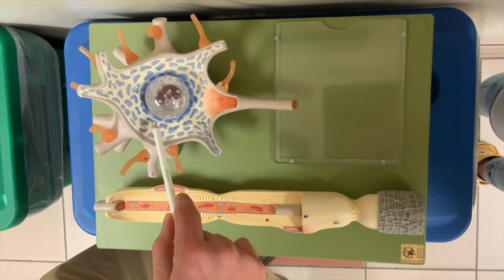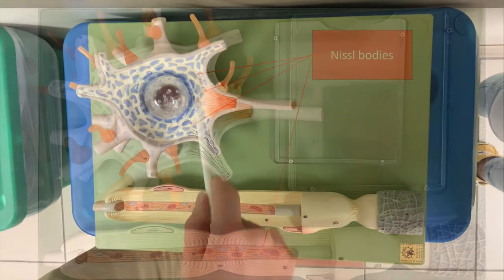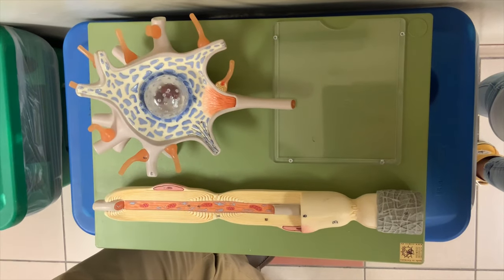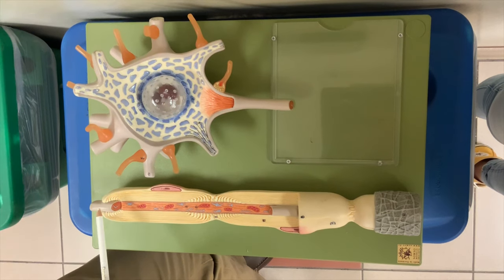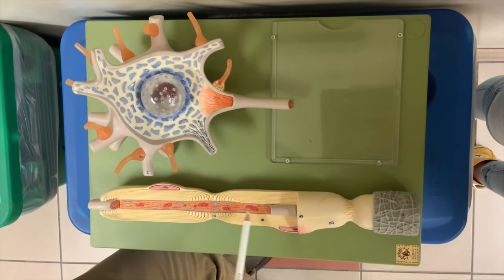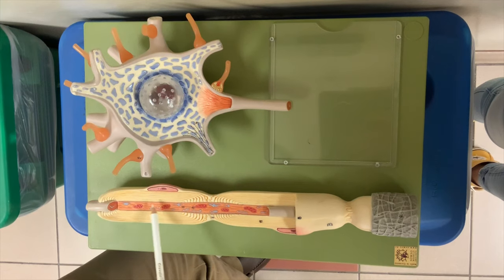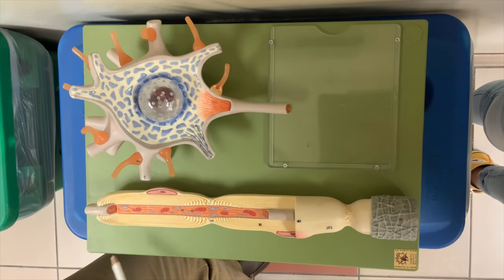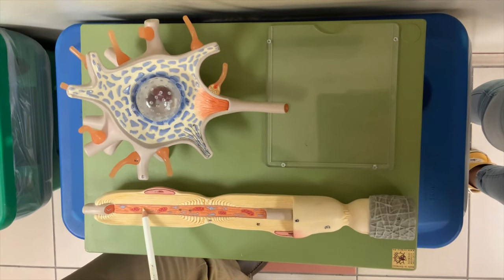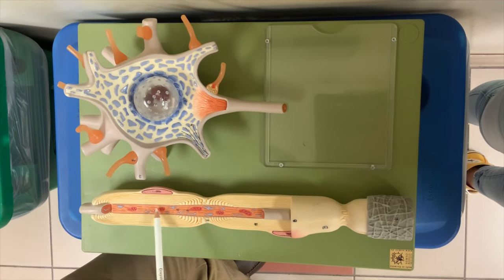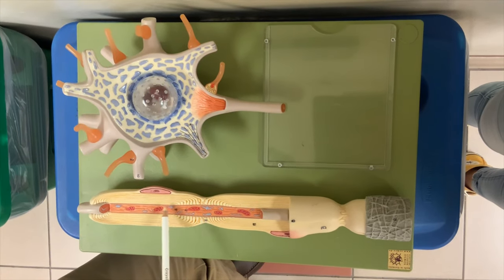These blue structures are going to be the Nissl bodies. And as we travel over here, you can see the axon cut in half. You can see the fluid inside the axon, which we call the axoplasm. You can see more Nissl bodies.